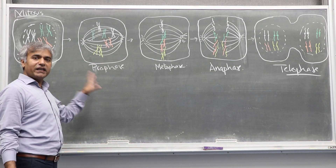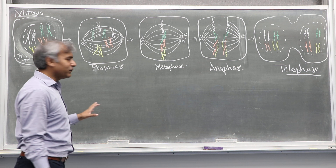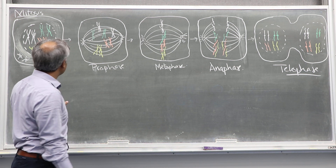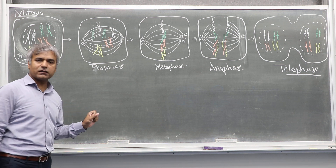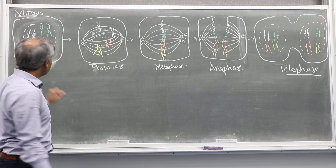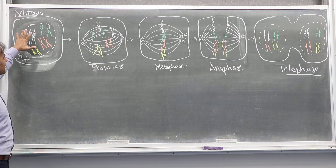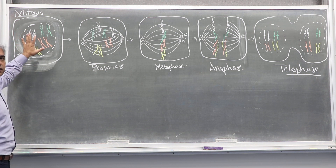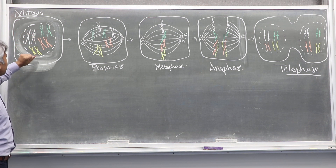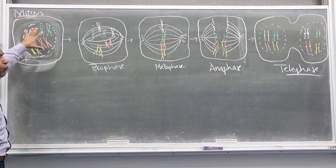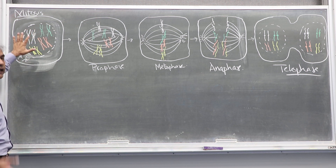We are going to have a quick recap of what we just learned about mitosis. Once a cell enters into mitosis, the diploid cell with four chromosomes — so four pairs of chromosomes.